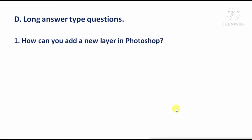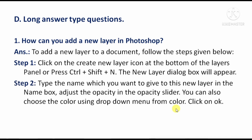Long answer type questions. How can you add a new layer in Photoshop? Answer: First, click on the new layer icon, or press Ctrl+Shift+N. A new layer dialogue box will appear. There, type in a name. If you want, you can also set the opacity and color. Finally, click OK.